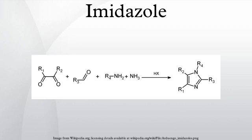Formation from other heterocycles: imidazole can be synthesized by the photolysis of 1-vinyl tetrazole. This reaction will give substantial yields only if the 1-vinyl tetrazole is made efficiently from an organotin compound, such as 2-tributylstannyl tetrazole. The reaction produces imidazole when R equals R1 equals R2 equals hydrogen.